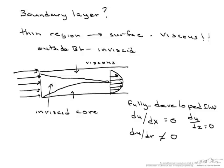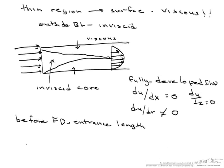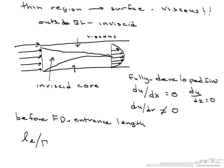Until it becomes fully developed, that is what is known as the entrance or entry length, entrance region. For the rest of the pipe, it is fully developed. So how do we determine what this entry length is?